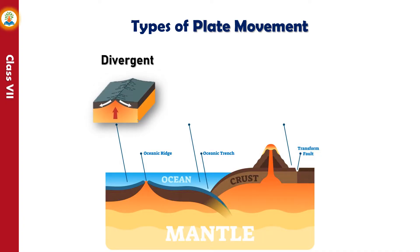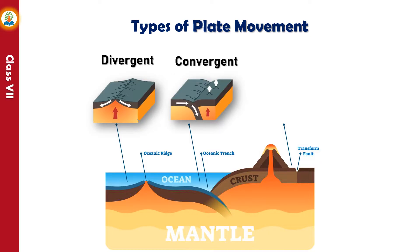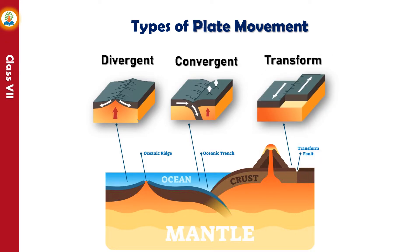Divergent plate movement occurs when, due to forces of tension, two plates move away from each other. Convergent plate movement occurs when, due to forces of compression, two plates move towards each other and collide. Transform plate movement occurs when two plates horizontally slide past each other.